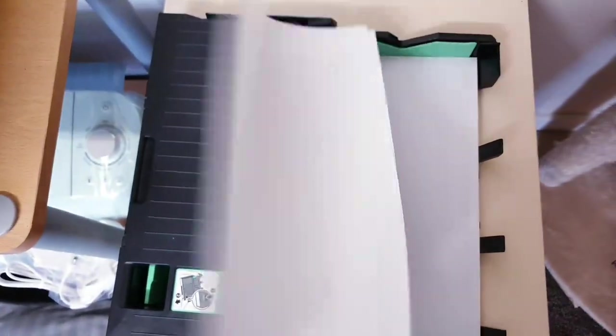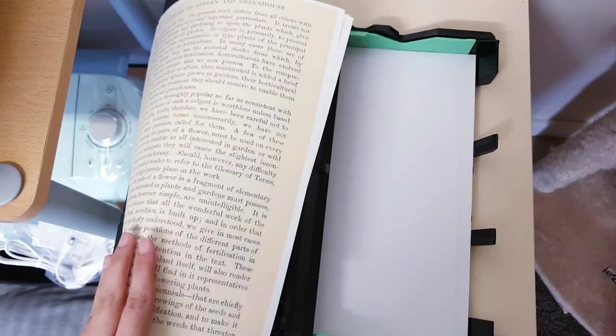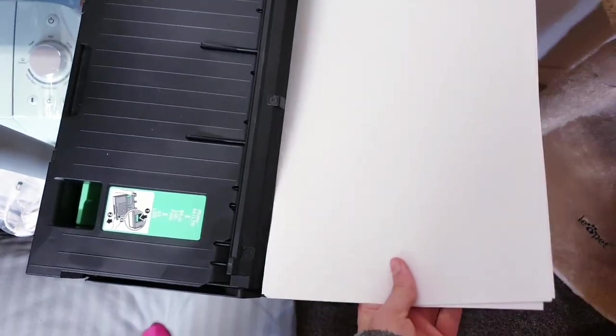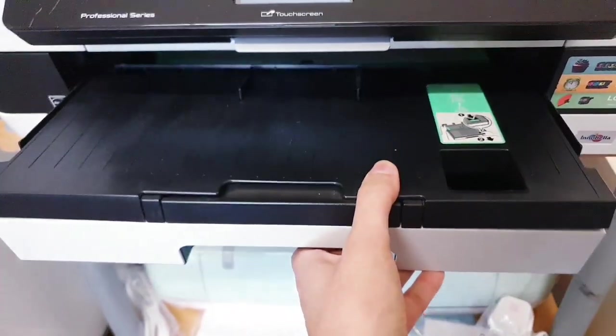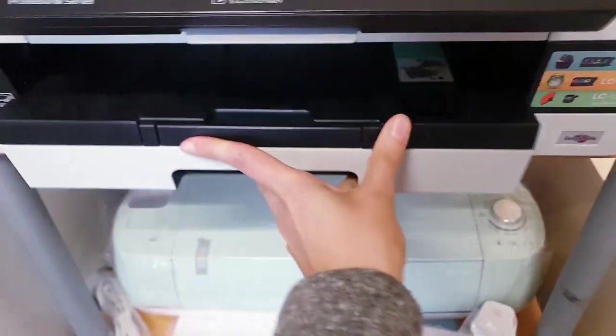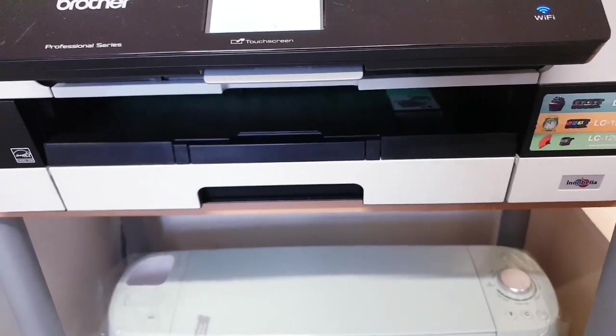Okay, so this is my printer tray. These are my vintage text printouts. I'm going to put them in this way, slot that back into the printer, and now all we need to do is go and print our images out